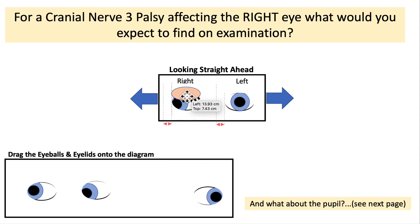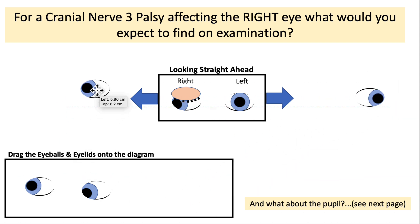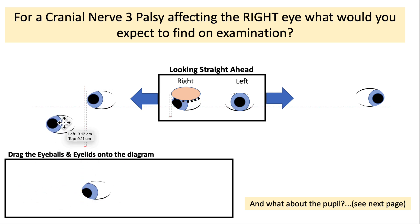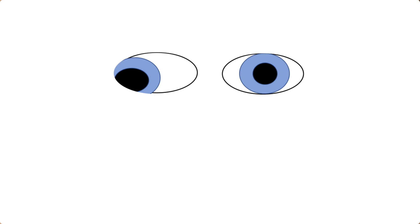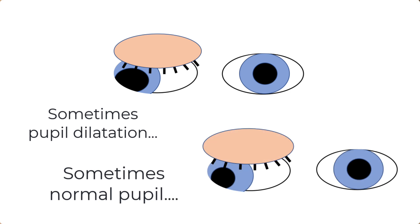We also have ptosis — eyelid droop — so you might actually have to lift the eyelid to see what's going on with the eye. When we try to move the eye, the left eye is totally normal with a full range of movement. On the right, we're not getting much action when trying to move the eyeball because all of the other movements are affected. So in a cranial nerve 3 palsy you will always have ptosis and issues with eye movements in most directions. And sometimes you will have pupil dilatation — and sometimes you won't. So what's the deal with this pupil and why is it so variable?